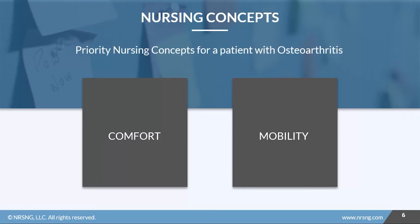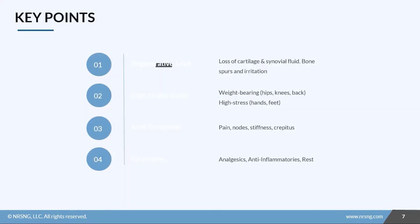Our nursing priority concepts for a patient with osteoarthritis are comfort and mobility. We want to address their pain and make sure they're able to get around safely. Make sure you check out the care plan attached to this lesson to see more.